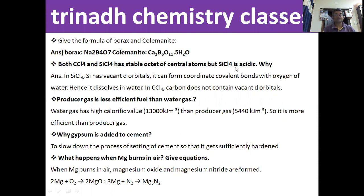Both carbon tetrachloride and silicon tetrachloride have a stable octet of the central atom, but SiCl4 is hydrolysed by water. In SiCl4, silicon has vacant d-orbitals and can form coordinate covalent bonds with oxygen of water; hence it dissolves in water. Since carbon doesn't have vacant d-orbitals, CCl4 doesn't undergo hydrolysis.